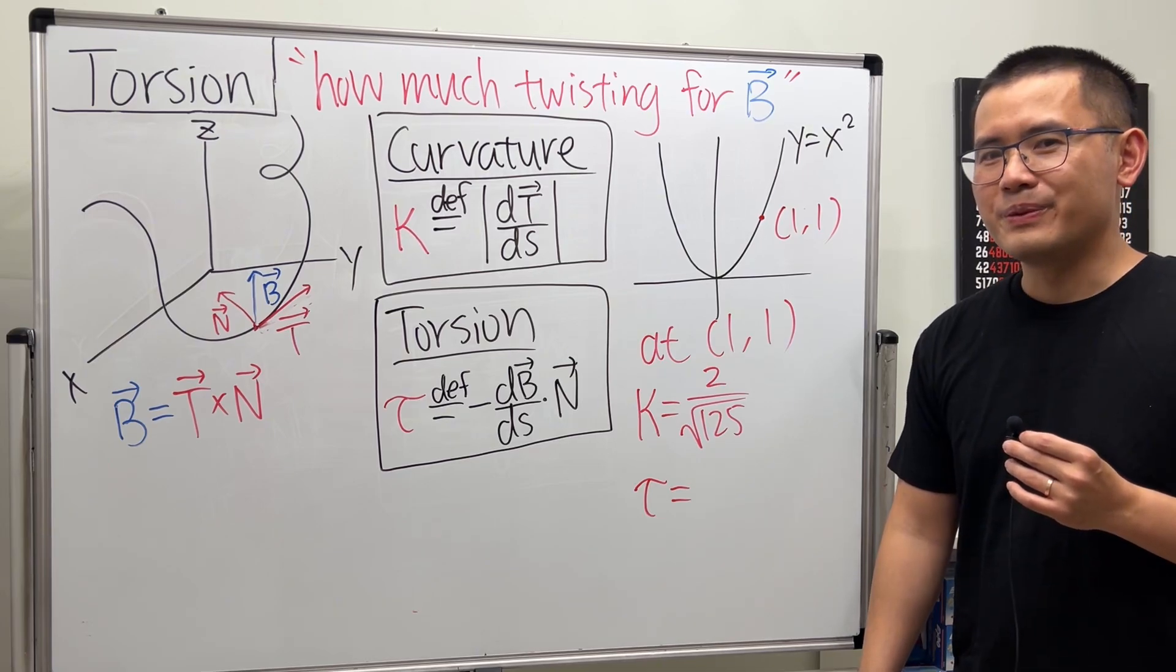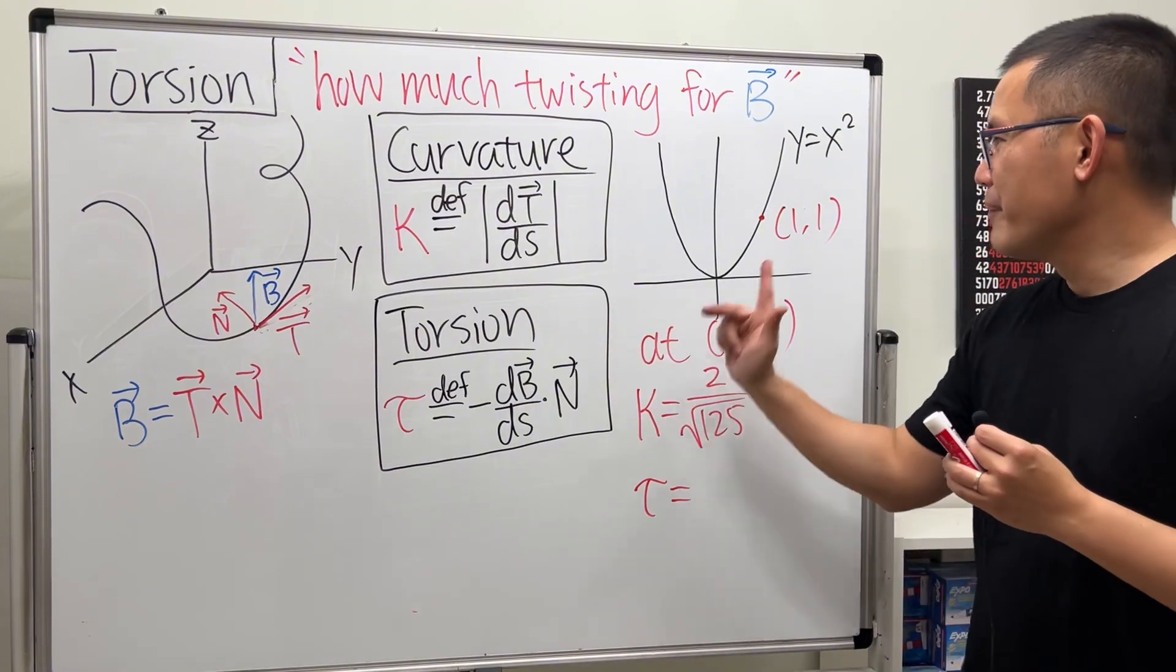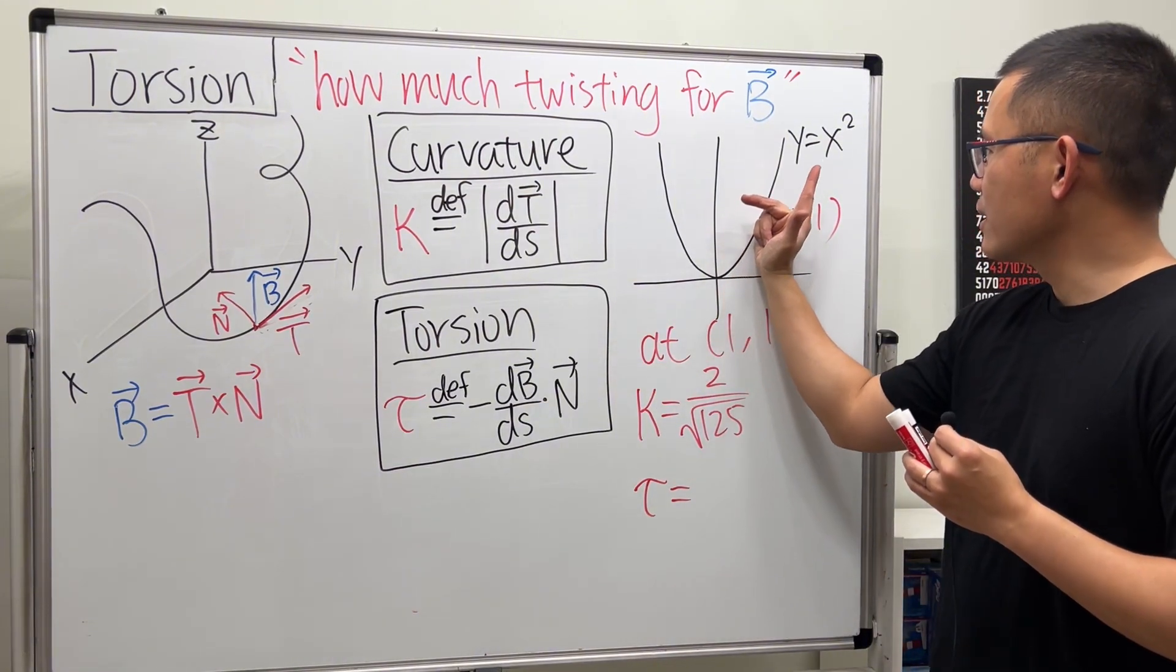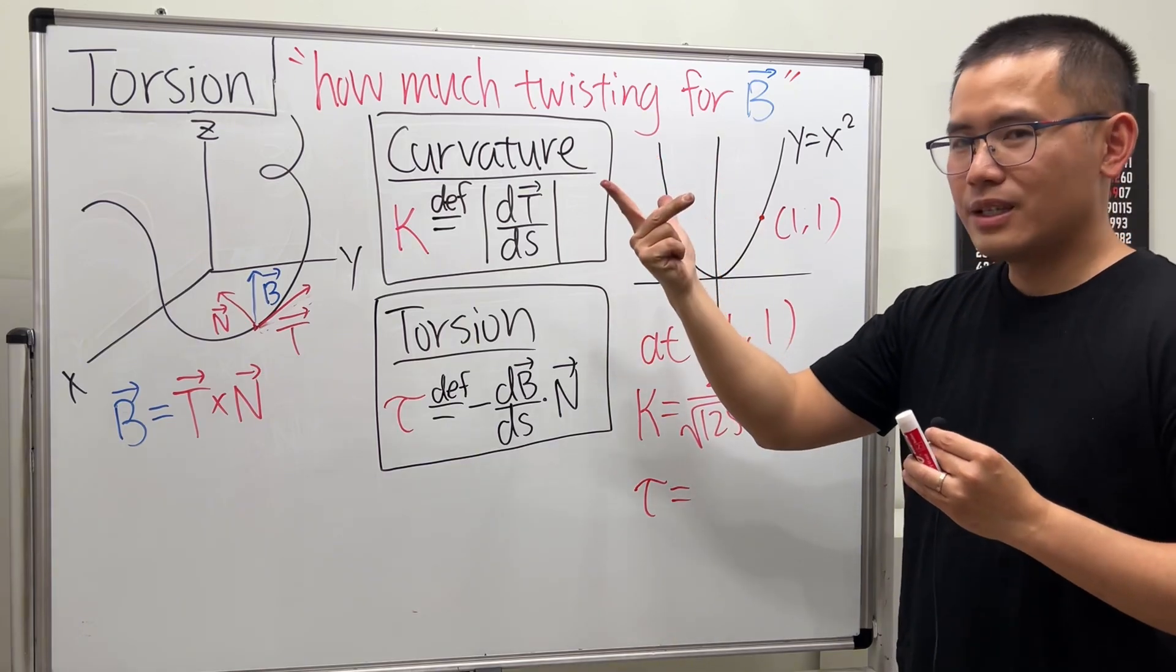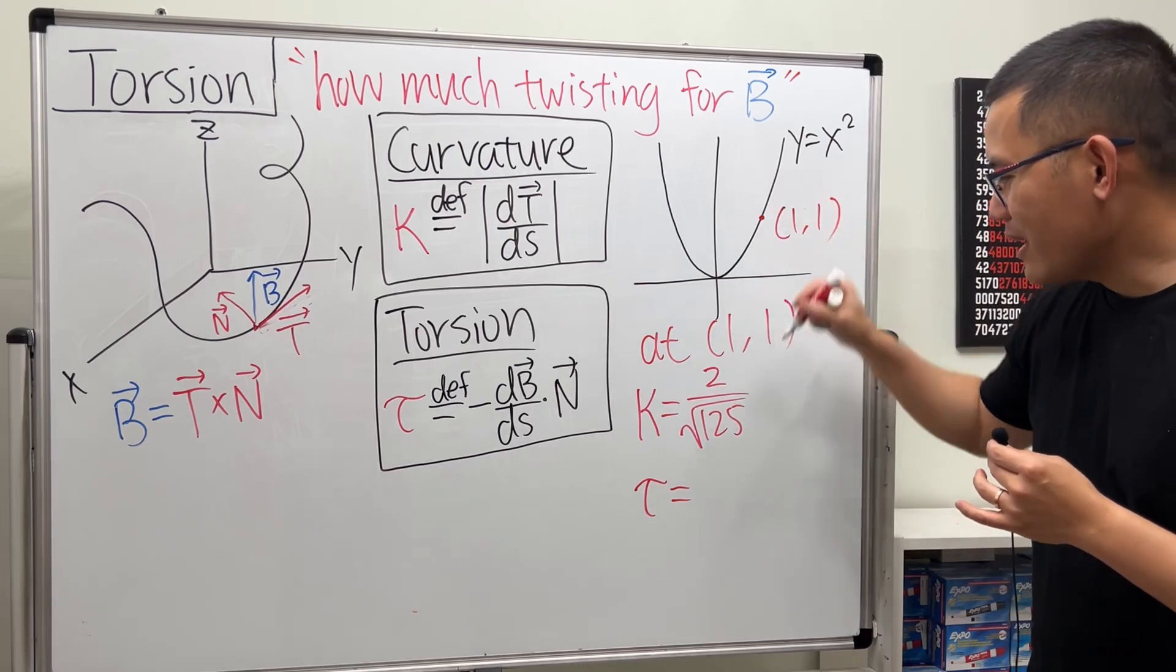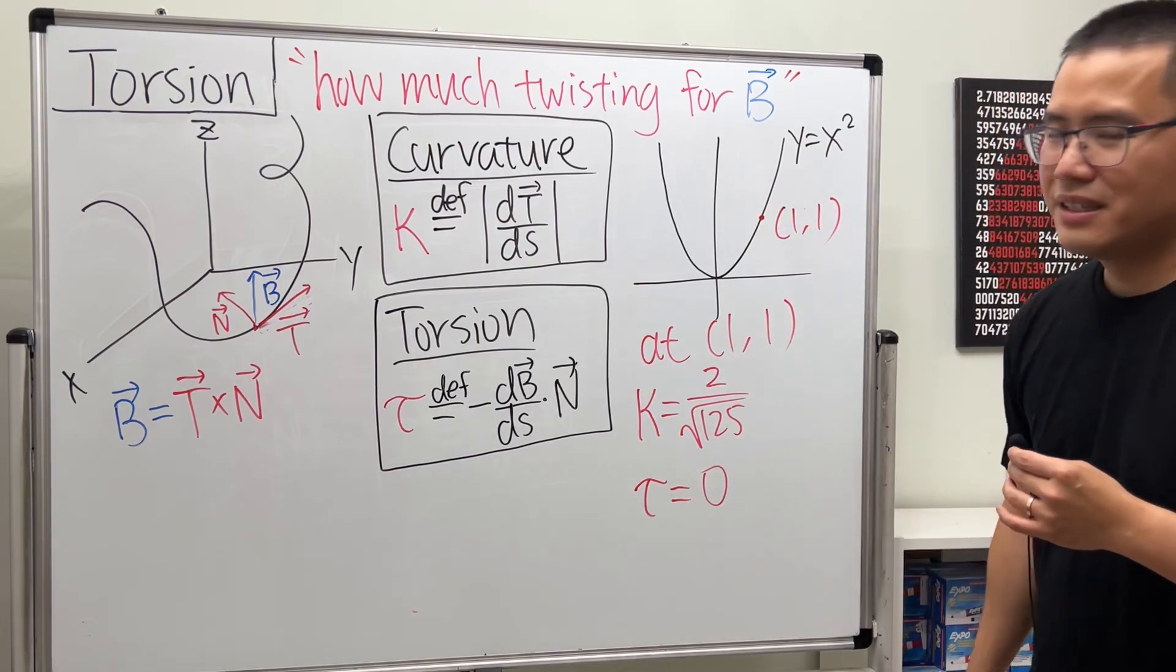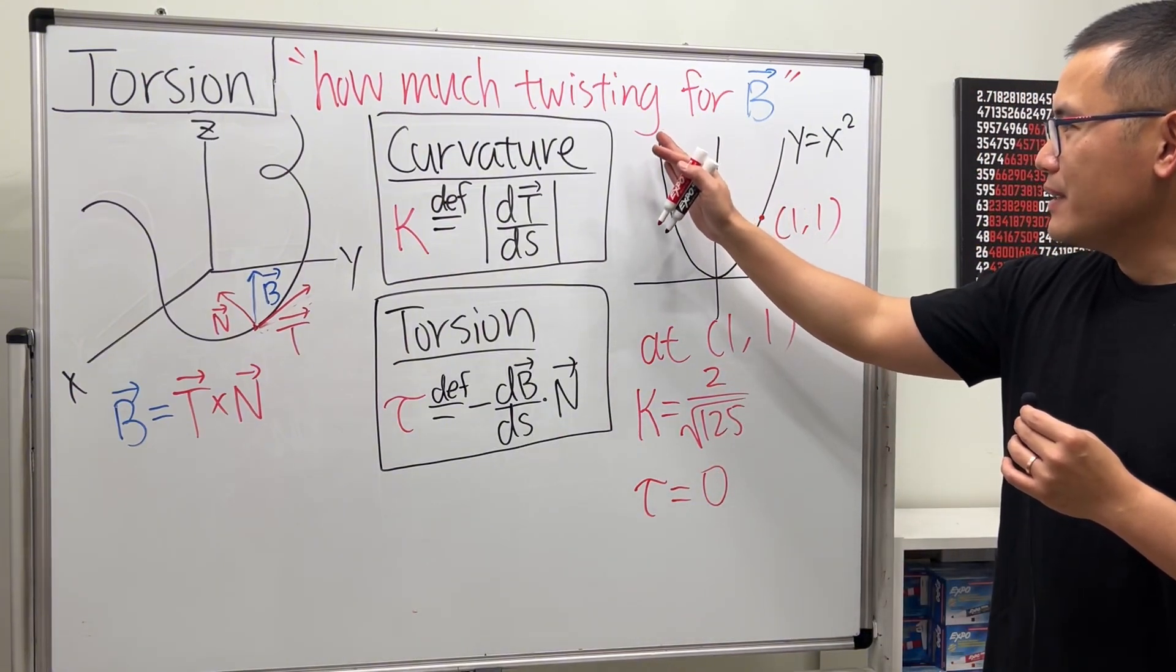Now let me ask you, can we figure out what τ is, the torsion at this point, without doing any computation? Well, let's just think about it. Again, hold up your hand like this, and we are traveling along the curve. Is B twisting, moving, rotating? No.